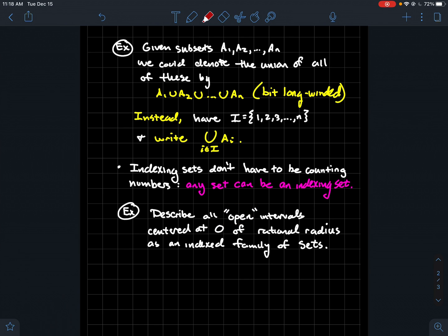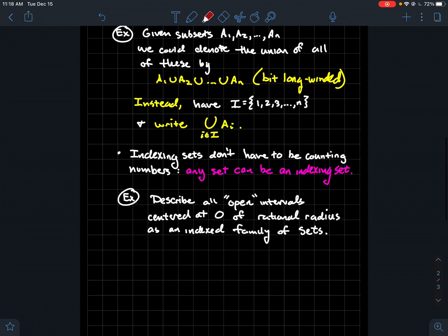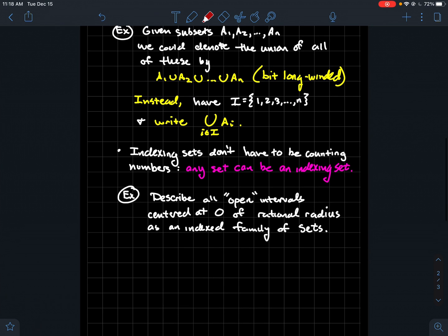Anyway, describe all the open intervals that are centered at zero on the number line. But I want to make sure that the radius is rational - some positive rational number. I want to describe all such open intervals as an indexed family of sets. If you had to describe those to somebody, write down what the description is in math symbols. An indexed family of sets is perhaps the most convenient way to do that.